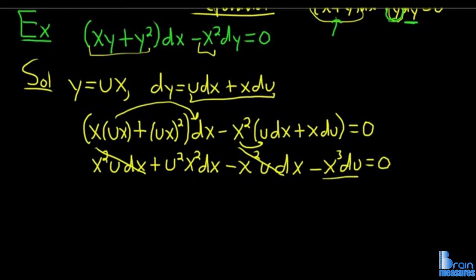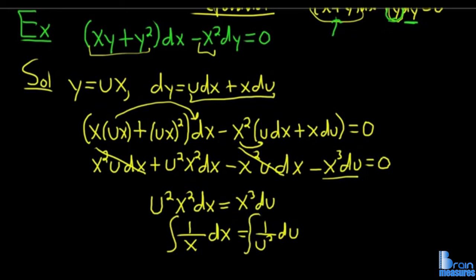Let's solve it. We'll add this to the other side: u²x²dx = x³du. We want to get all the x's on one side, so divide by x³. That gives us (1/x)dx, and it gives us (1/u²)du.